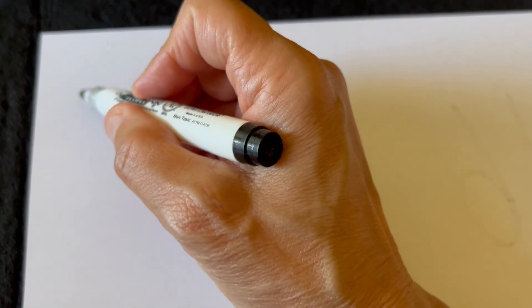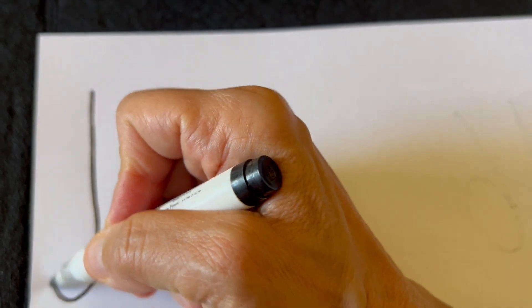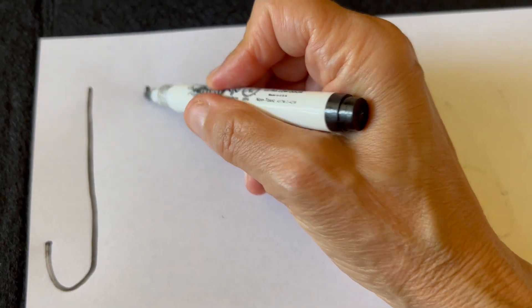We're going to make a treble clef using three symbols. We're going to start off with the J and then we're going to make a D.